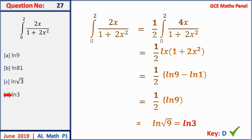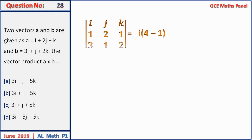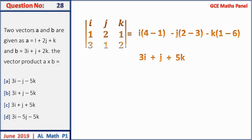Question 28: find the cross product a × b where a = (1, 2, 1) and b = (3, 1, 2). Using the determinant method: i(2×2 − 1×1) − j(1×2 − 3×1) + k(1×1 − 2×3) = 3i + (−1)j·(−1) + k(1 − 6). Simplifying gives 3i + j − 5k. Answer C.